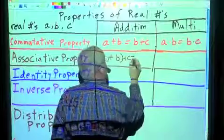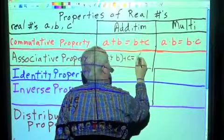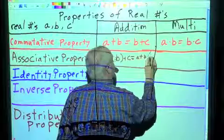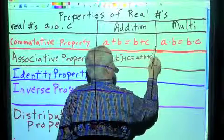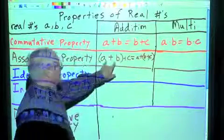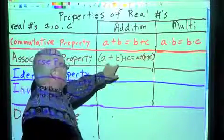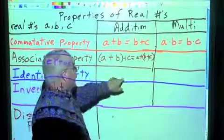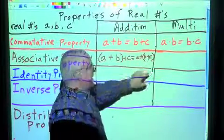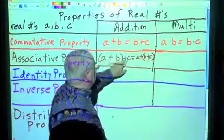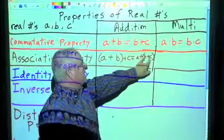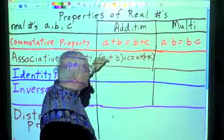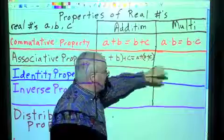This is going to equal A plus B plus C. So it doesn't matter how I associate it. The B here is associated with A; over here it's associated with C. When we're doing pure addition all the way across, it doesn't matter how we associate or which one we do first.